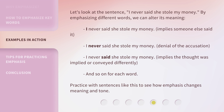Let's look at the sentence: 'I never said she stole my money.' By emphasizing different words, we can alter its meaning. 'I never said she stole my money' implies someone else said it. 'I never said she stole my money' is a denial of the accusation. 'I never said she stole my money' implies the thought was implied or conveyed differently. Practice with sentences like this to see how emphasis changes meaning and tone.